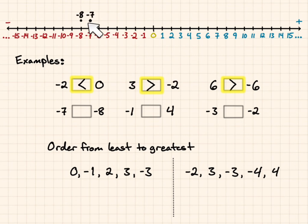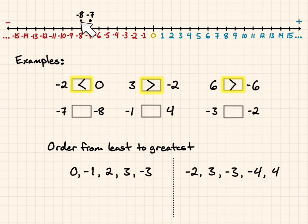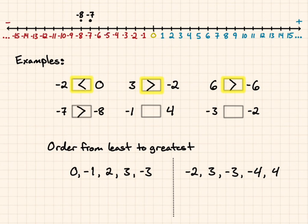For negative 7 and negative 8 — this is one that's commonly missed. Put those on the number line and we can see that negative 8 is further to the left than negative 7, so negative 7 is greater than negative 8.